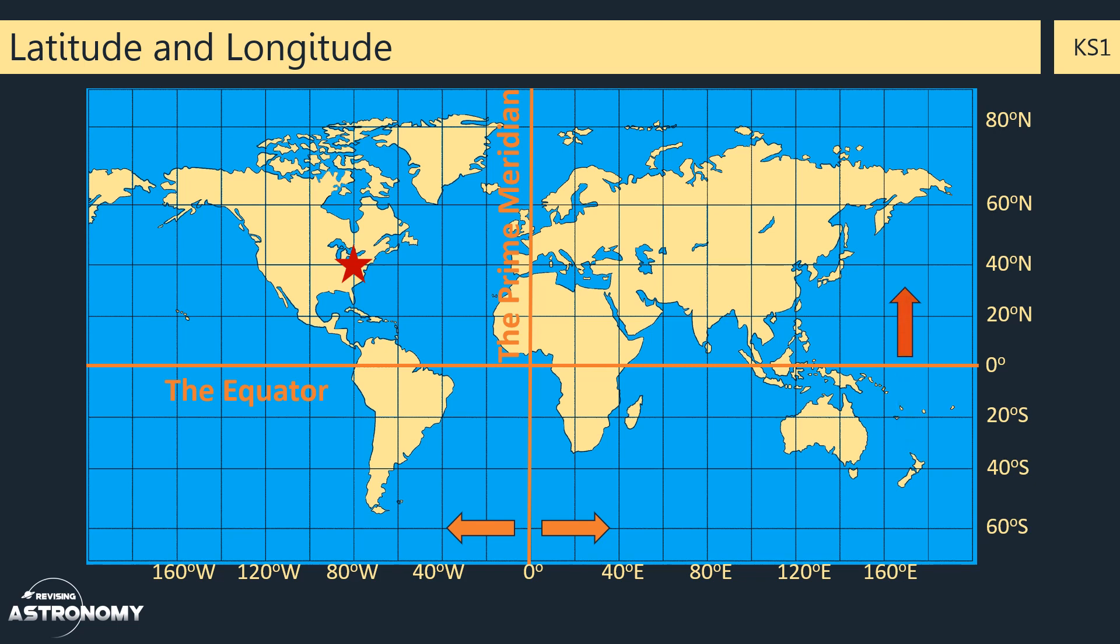As you can see here, it's north of the equator, it's in the northern hemisphere. So to find out the latitude, you simply draw a straight line across the map, and here you can see that this location is situated at 40 degrees north.